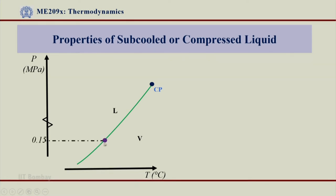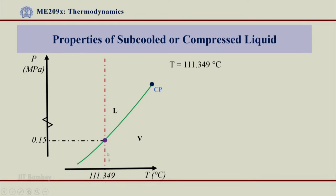Let us look at a specific pressure case which is 0.15 MPa — one can take any pressure, but I have taken 0.15 MPa just as an example. Corresponding to this, if I want to find out the T-SAT value, I will refer to table number 2 and get the corresponding temperature value, which happens to be 111.349. Corresponding to this pressure I have taken T-SAT of 111.349 and I draw this line vertically to see the effect of various pressures in the subcooled or compressed liquid region.